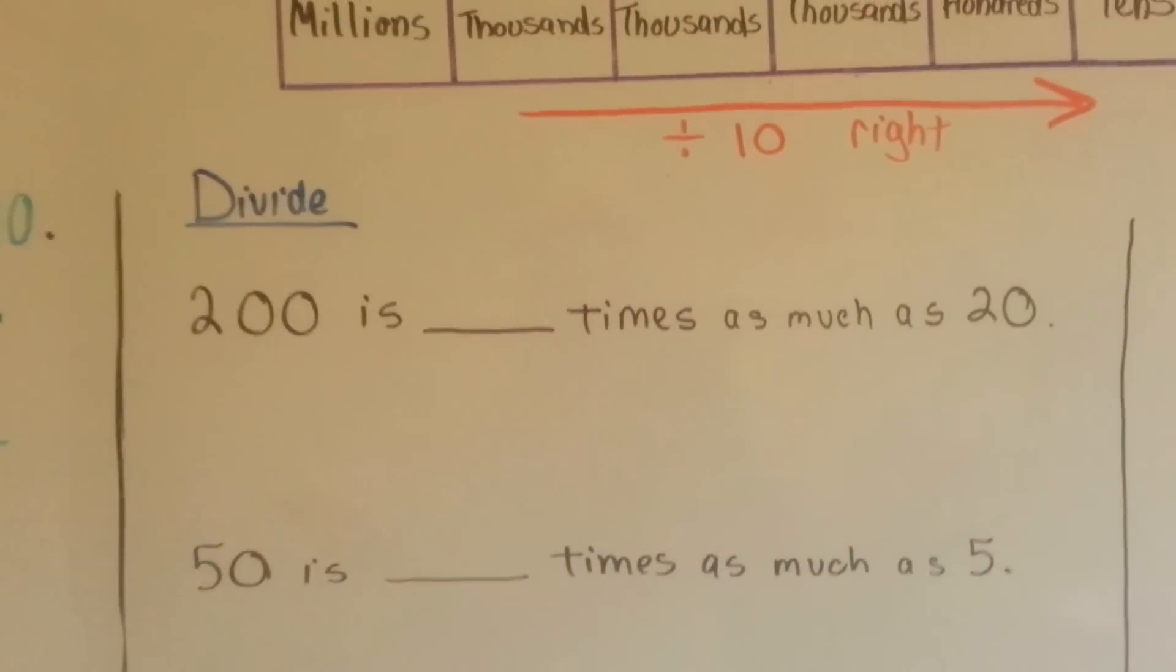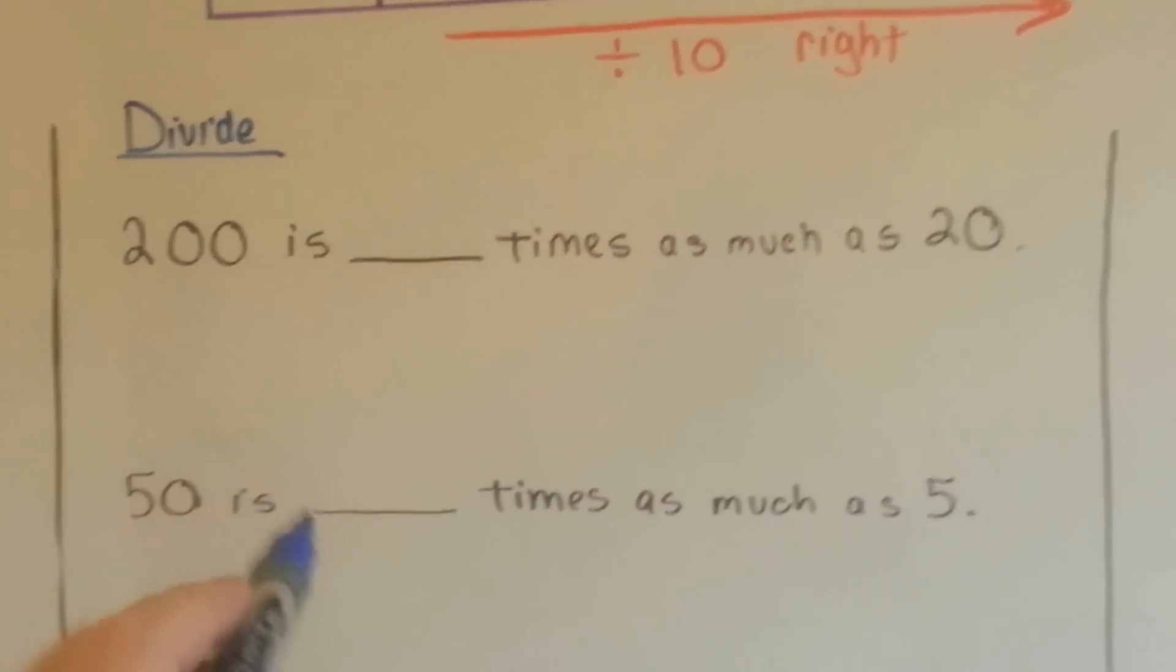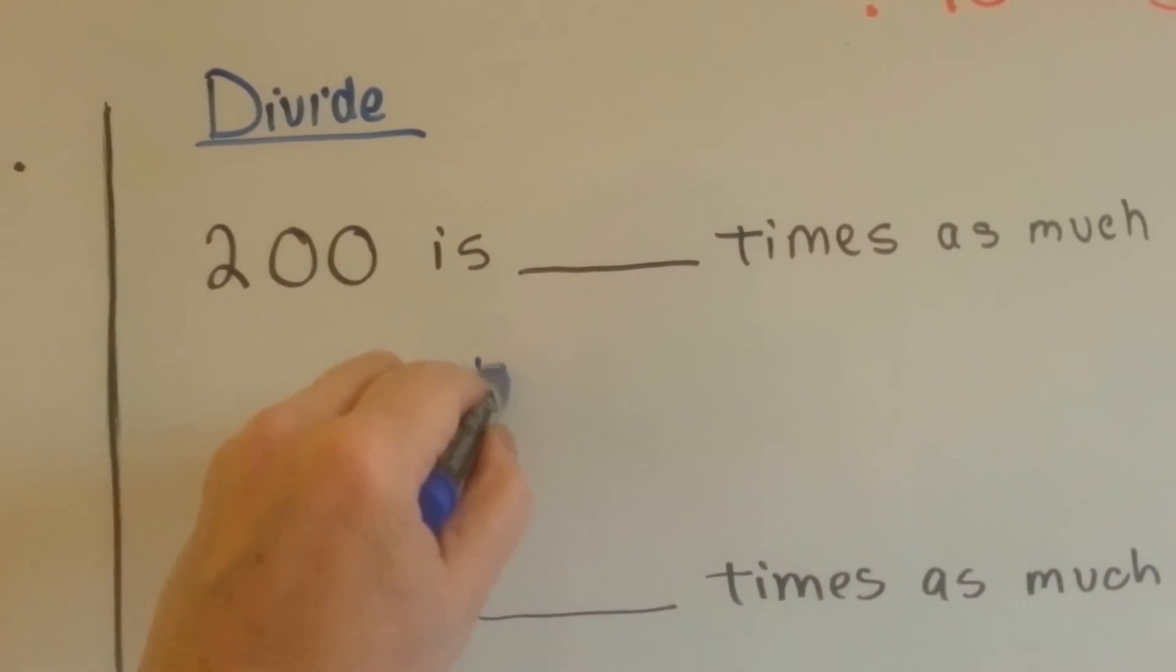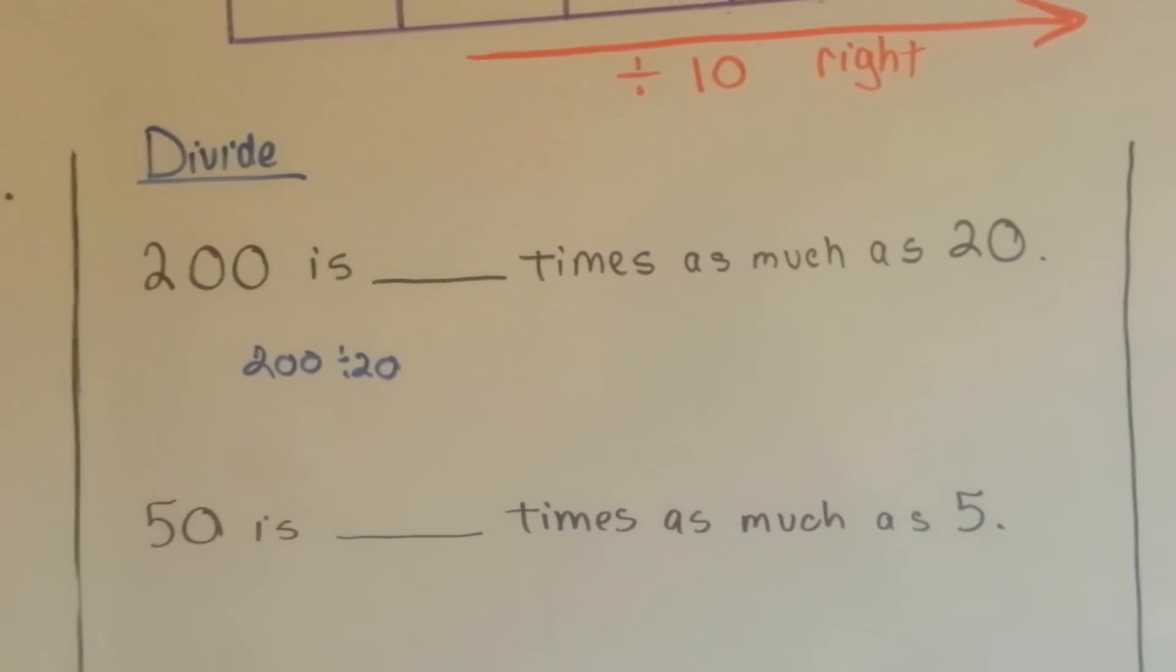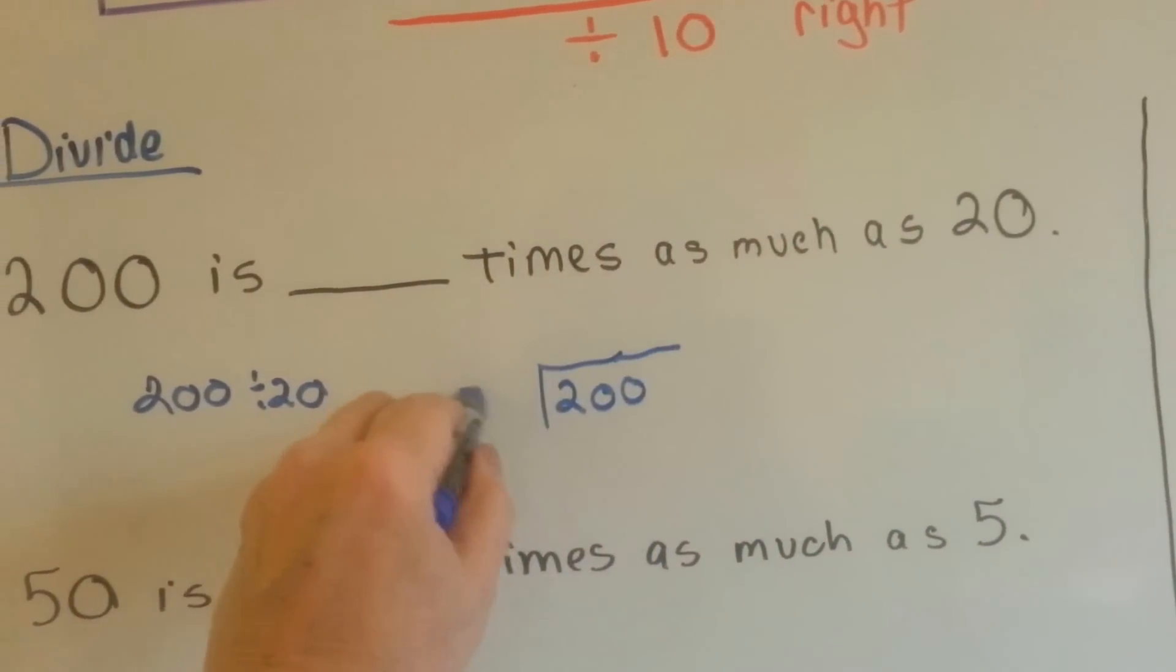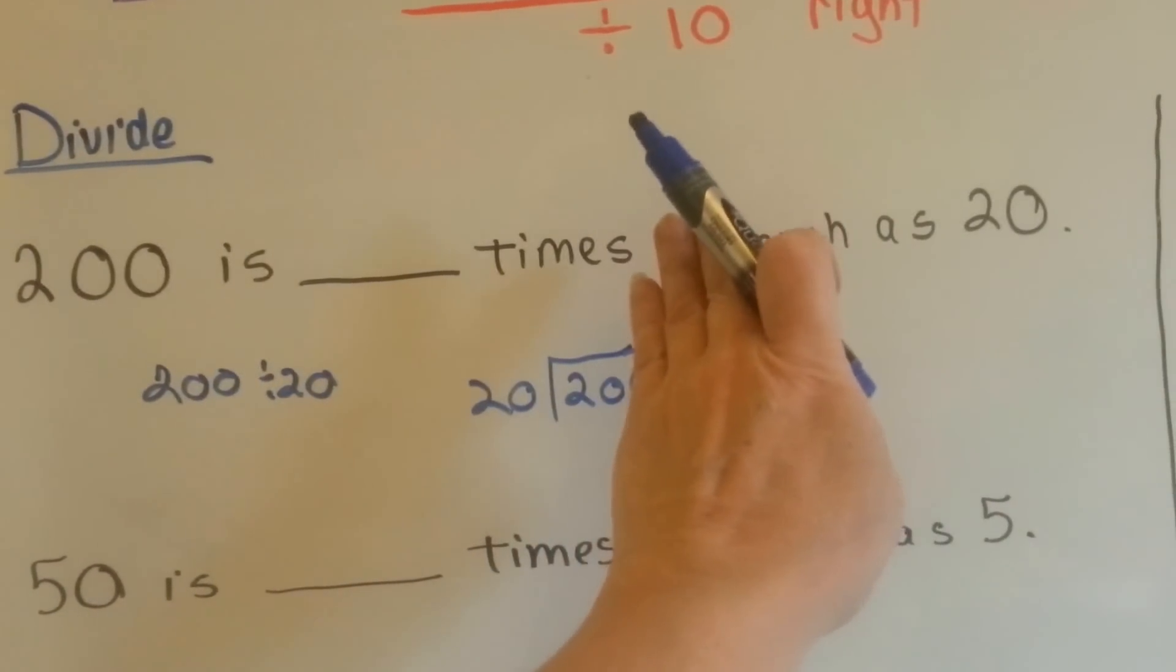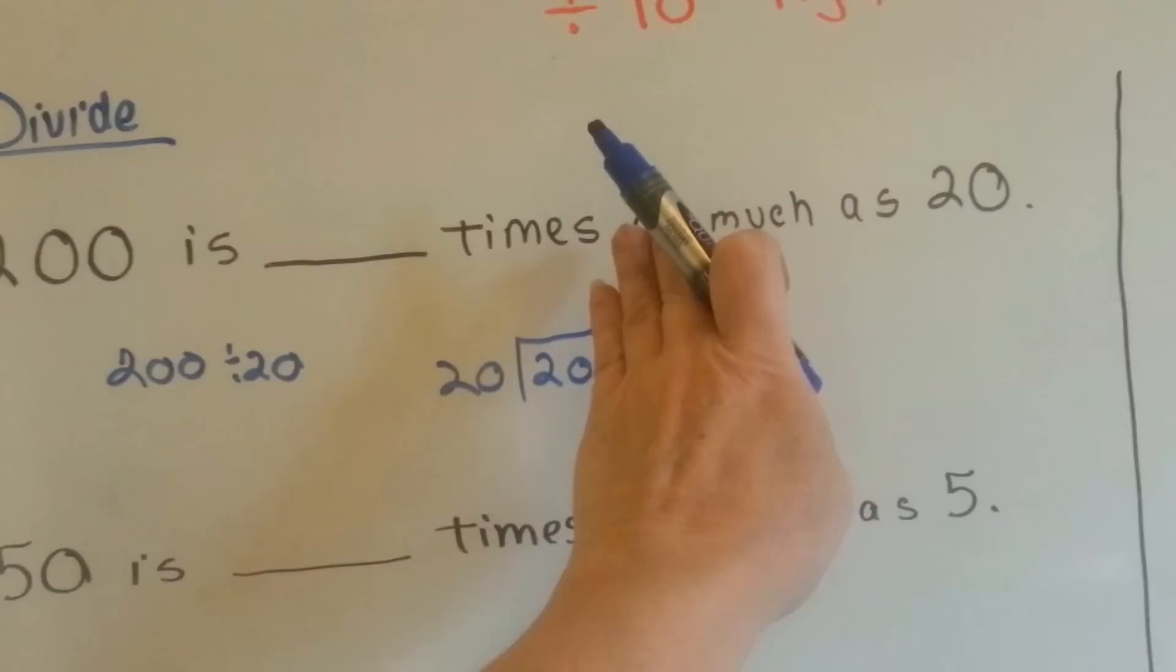So, in order to do these, we would divide. 200 divided by 20, and that would tell us the answer. How many times can 20 fit into 200? We can do it this way. How many 20s fit into that 20? Because it can't fit into the 2.